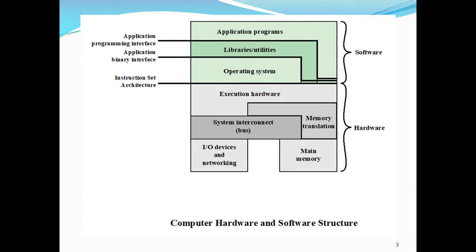An application can be expressed in a programming language and is developed by an application programmer. To develop an application as a set of machine instructions completely responsible for controlling computer hardware would be an overwhelming complex undertaking. To address this, a set of system programs is provided. Some of these programs are referred to as utility programs or library files, which implement frequently used functions that assist in program creation, management of files, and control of I/O devices. A programmer will make use of these facilities in developing an application, and the application while running will invoke the utilities to perform certain functions.